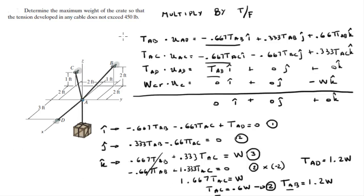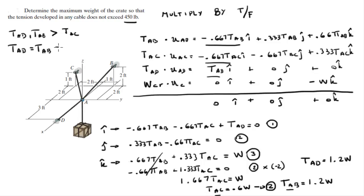Now that all tensions are expressed in terms of W, since the maximum allowed tension is 450 pounds, we identify the largest tensions. T_AB and T_AD are both equal to 1.2W, which is greater than T_AC = 0.6W. Setting 1.2W = 450 pounds and solving gives W = 450 / 1.2 = 375 pounds. That's the final answer.